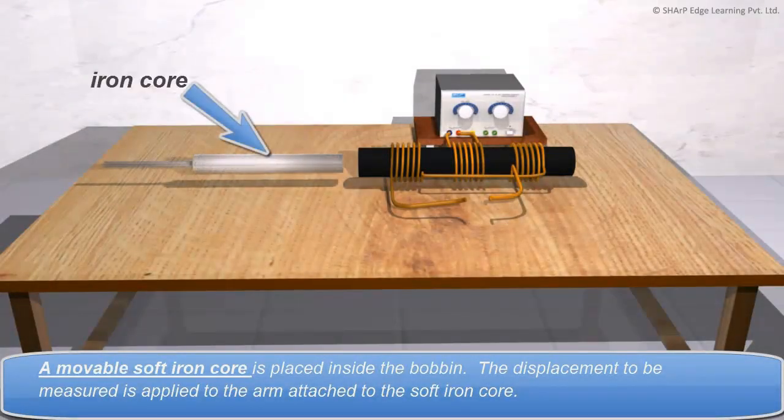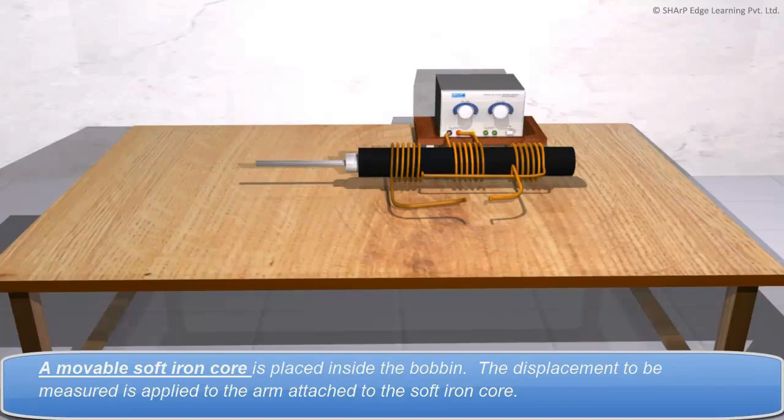A movable soft iron core is placed inside the bobbin. The displacement to be measured is applied to the arm attached to the soft iron core.